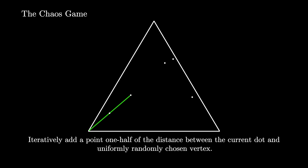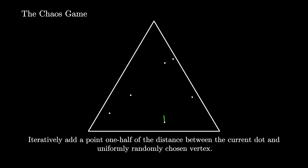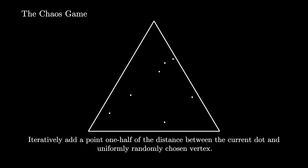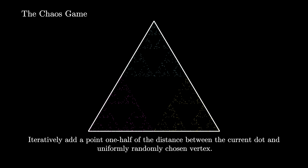If we continue this process a number of times, we will actually end up producing the Sierpinski triangle. Though it's seemingly random, it produces order. Let's see what it looks like when we repeat this process 30,000 times.